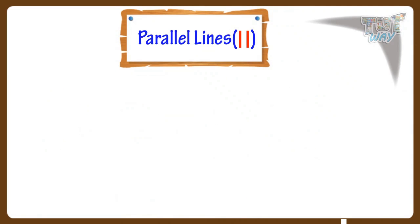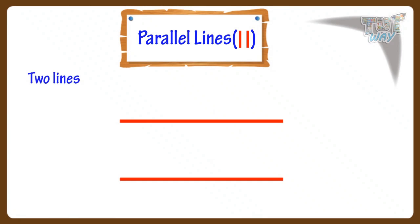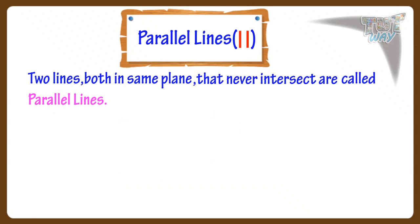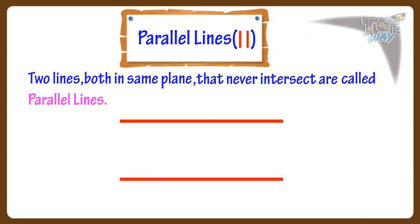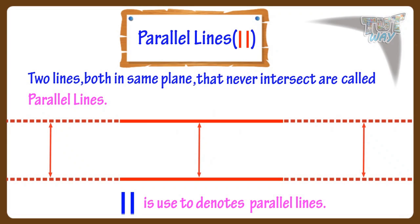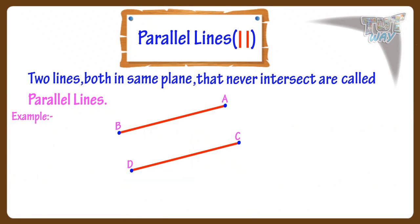Let's see what are parallel lines. Two lines, both in the same plane, that never intersect are called parallel lines. Parallel lines remain the same distance apart at all times. These are two parallel lines — they can never meet each other. No matter how far you extend them, they can never meet. The distance between them always remains the same. This symbol is used to denote parallel lines. The lines AB and CD are parallel to each other, written like this — this symbol denotes that these two lines are parallel to each other.